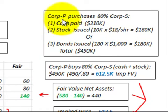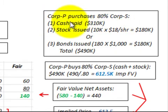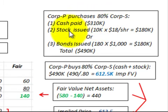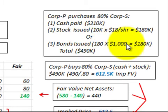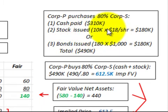In our example, corporation P purchases 80% of corporation S. They're going to pay in two methods: a cash payment for $310,000, and either stock issued or bonds issued to the subsidiary corporation for $180,000. In either case, the stock or bonds issued go directly to corporation S to purchase the subsidiary corporation, not to any outside parties.